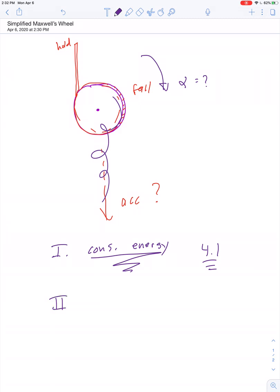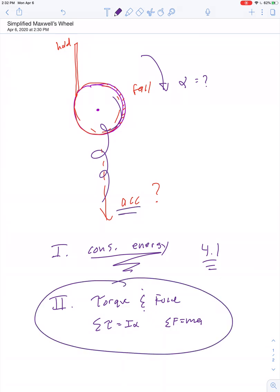So the second approach would be consider torque and force. In particular, the idea that net torque is I-alpha and net force is Ma. Let's use this approach to figure out what the linear acceleration and angular acceleration happen to be for the falling Maxwell's wheel.